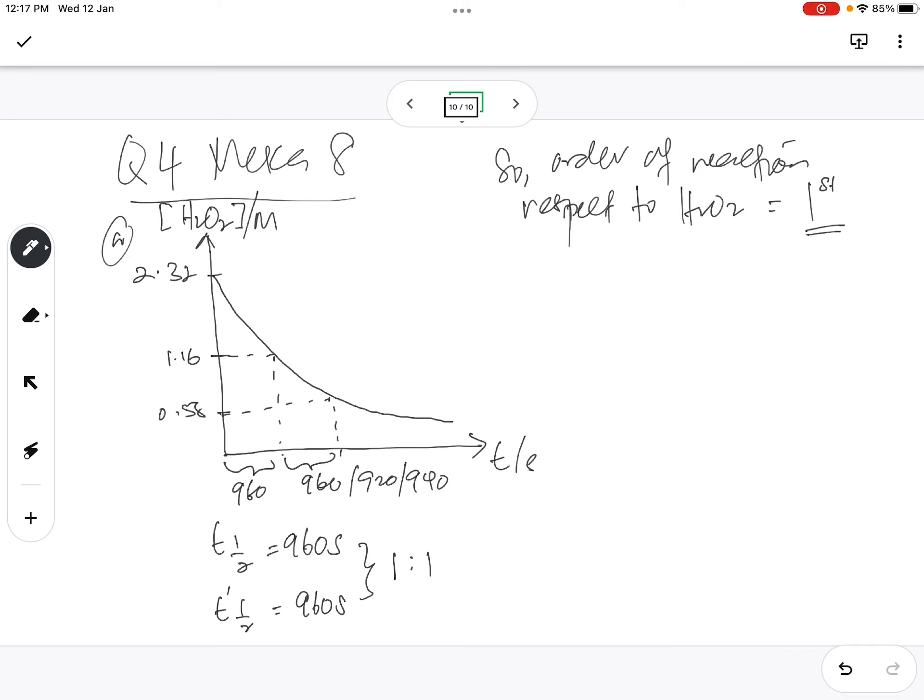Okay, now they want us to tell the half-life, which we already got from the graph, is 9.60 second. That is also settled, okay. And the third one is rate constant.